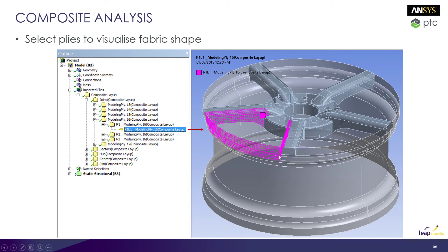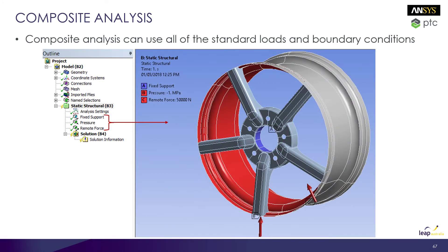In this case, I've selected one of my plies on a composite wheel and it's showing the fabric reinforcement area specified by that ply. Applying loads and boundary conditions to a composite model is really no different to any other mechanical model — all boundary conditions available in mechanical are compatible with composites. It's going to be no different from simulating aluminium or steel.